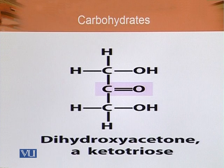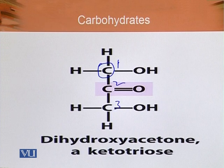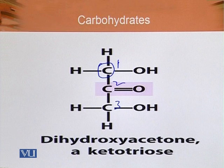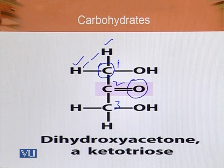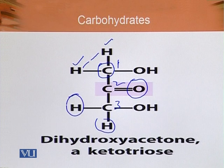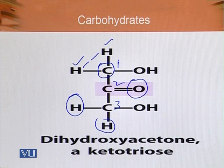Looking at the structure of dihydroxyacetone, we can see that carbon atom number one, two, and three — none of them is an asymmetric or chiral center. Carbon atom number one has two identical hydrogen attachments. Similarly, carbon atom two has a double bond with oxygen, and carbon atom three again has two hydrogen atoms. So there is no asymmetric carbon atom, and therefore no optical activity.